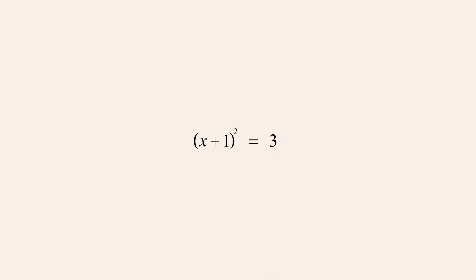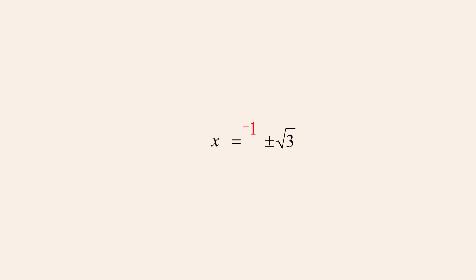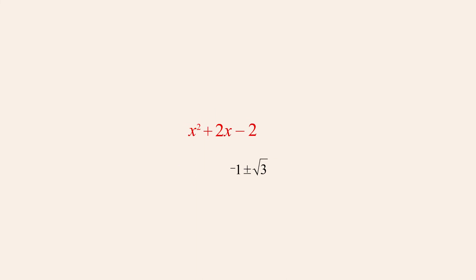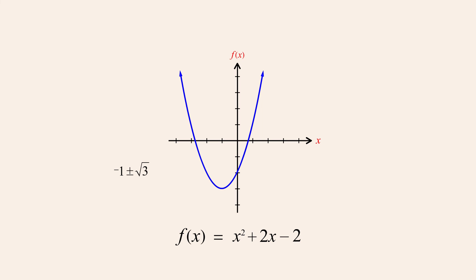Once again, we solve for x by taking the square root of both sides of the equation. So the solution set of the quadratic equation x-squared plus 2x minus 2 equals zero is negative 1 plus or minus the square root of 3. Likewise, the zeros of the function x-squared plus 2x minus 2 are negative 1 plus the square root of 3 and negative 1 minus the square root of 3.